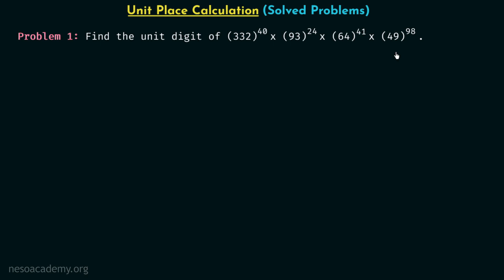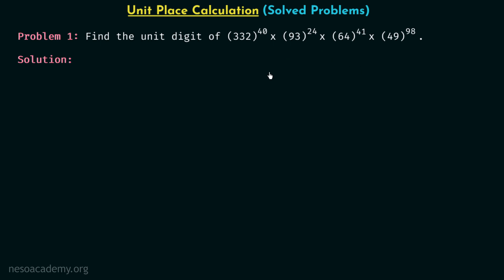We are required to find the digit at the unit place of this multiplication. We are going to focus on these powers independently and find the digit at the unit place of each one by one. Once we have all the digits at the unit place, we will simply multiply them all.